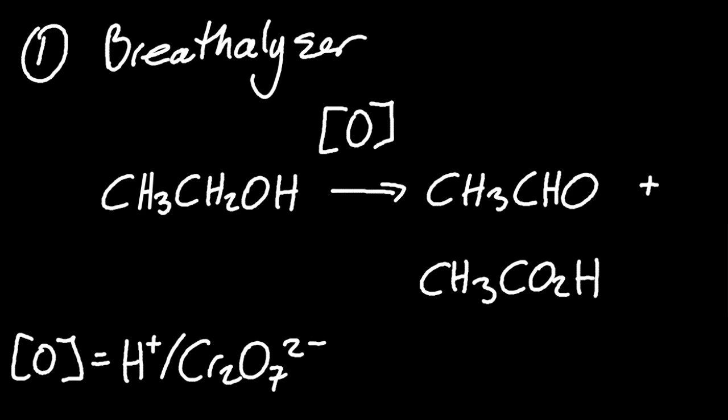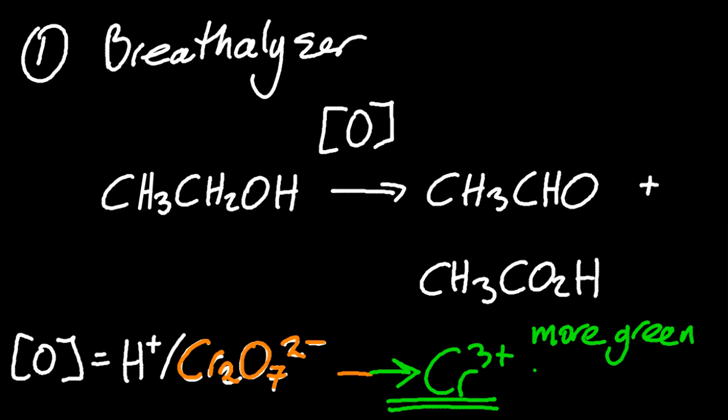And it was orange, and it went green. So the dichromate is orange, and the chromium 3 plus that's produced is green. So the more green there is, the more alcohol there is in your breath, and probably in your brain.